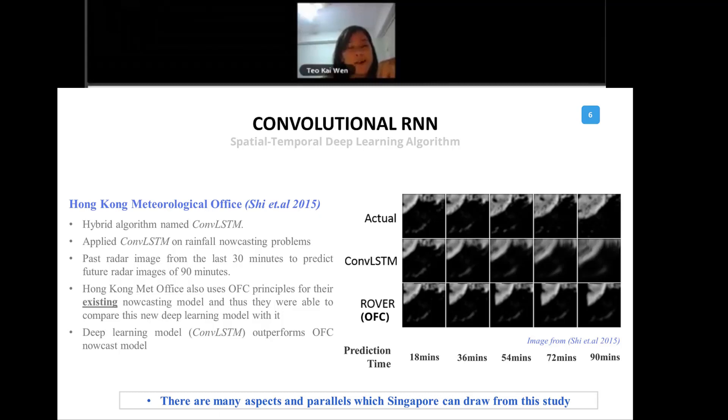In 2015, a group of Hong Kong met office researchers tried to combine the convolutional neural network with the recurrent neural network. It actually adopts the best of both worlds: image recognition features and spatial and temporal prediction. This hybrid algorithm is called ConvLSTM. They apply this ConvLSTM on rainfall nowcasting problems.